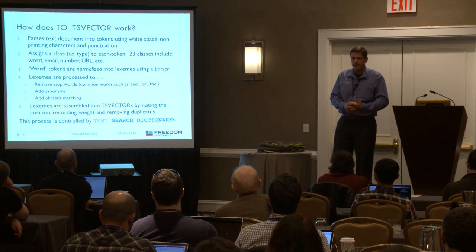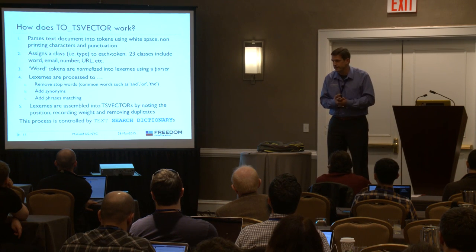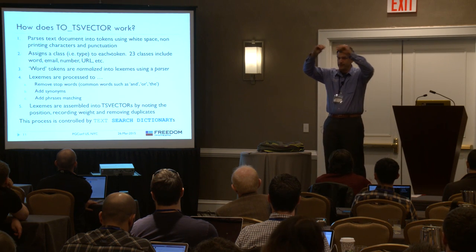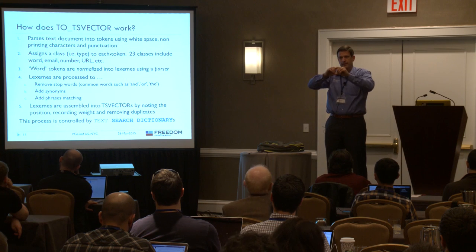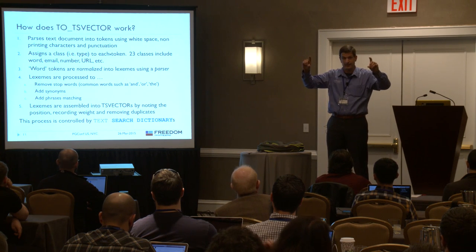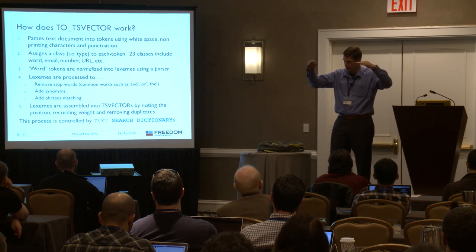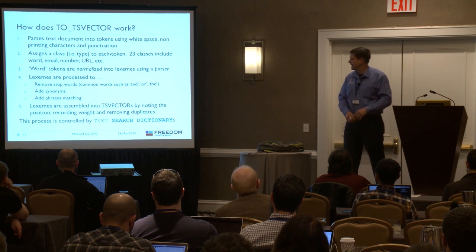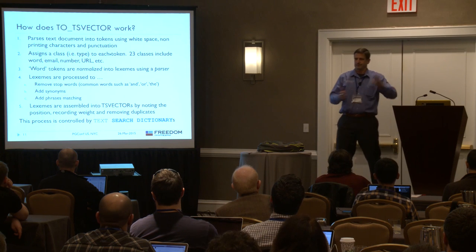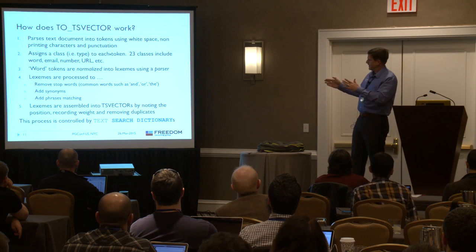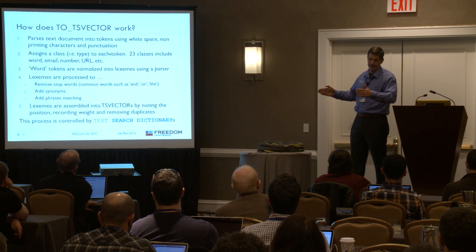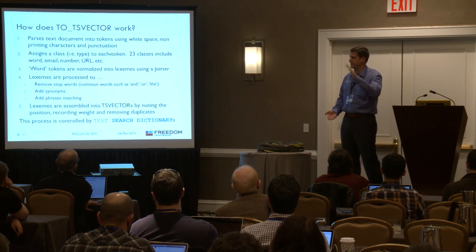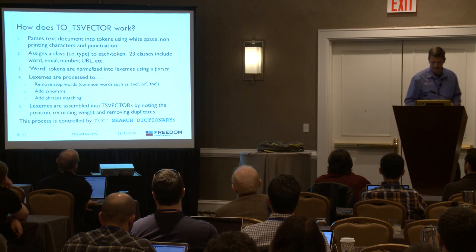There is the capability in a TS vector to add weights. What that means is, if I have a match in the title of a document, it matters more than if I have a match in the abstract of a document, which in turn matters more than a match in the body of the document. We're going to build some weighted TS vectors. And this whole thing in Postgres is called a text search dictionary — think of it as a collection of all the rules you're going to use to set up and use full-text search.